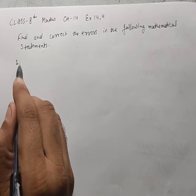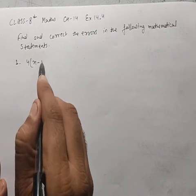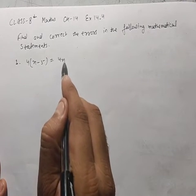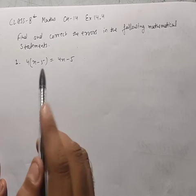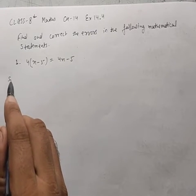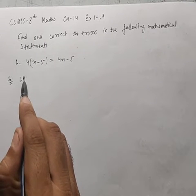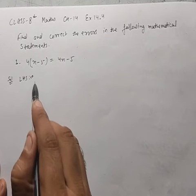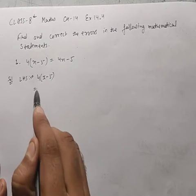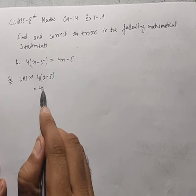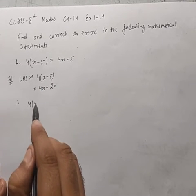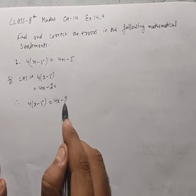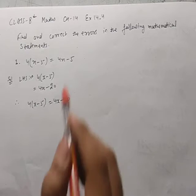Question 1: Is 4(x-5) equal to 4x-5? Check whether it is equal or not. The left hand side is 4(x-5). Applying distributive property: 4x-20. So 4x-5 is not equal to 4x-20. The error is the 5; it should be 20.